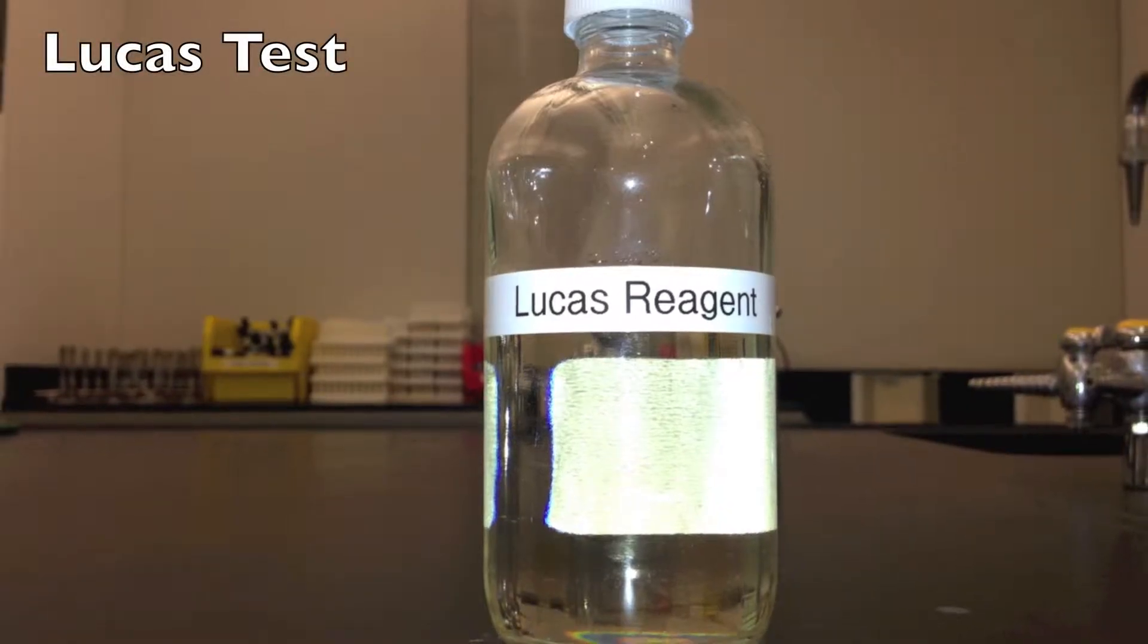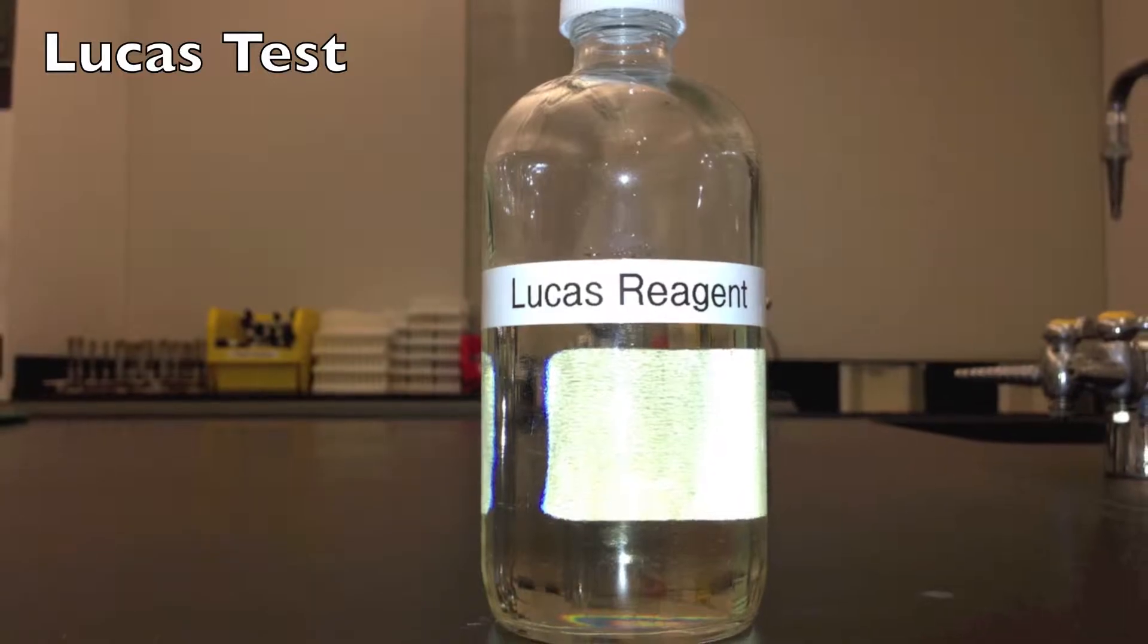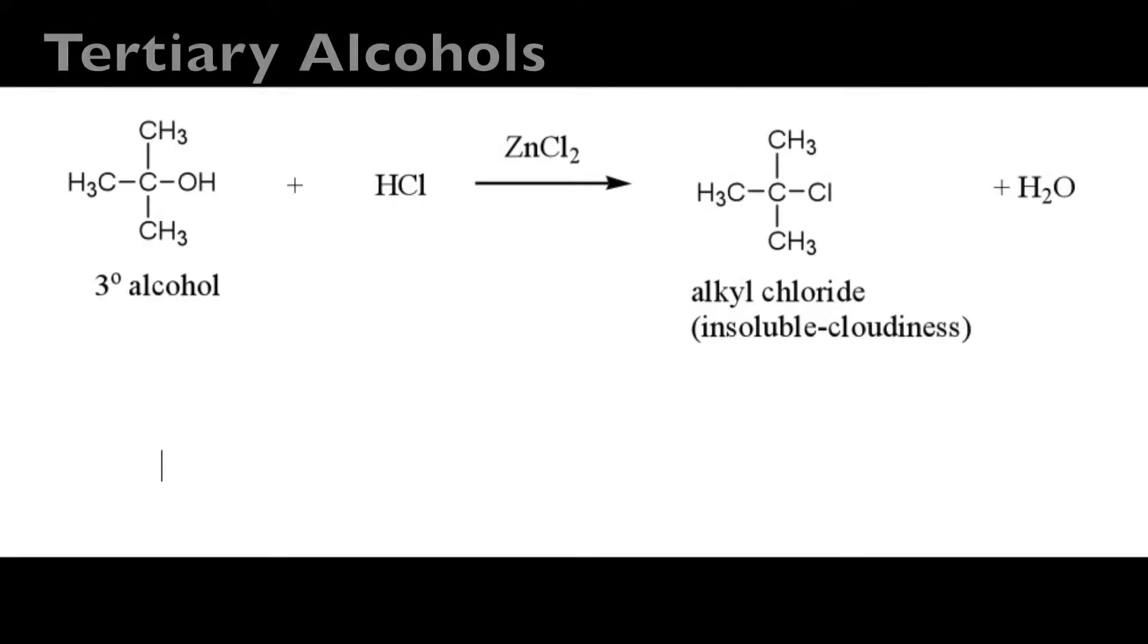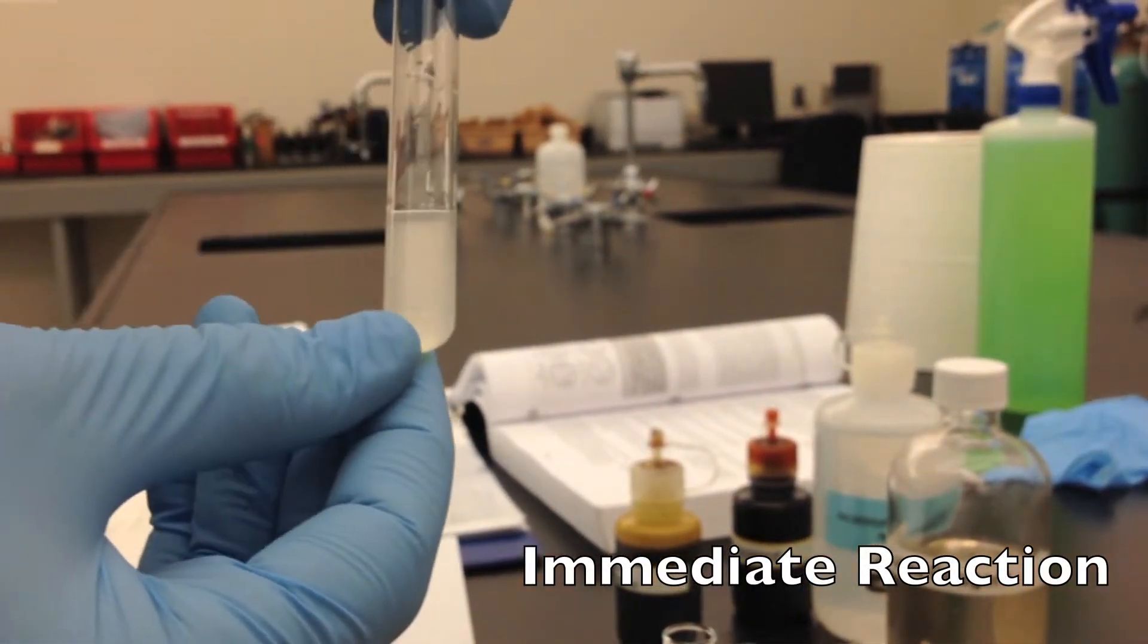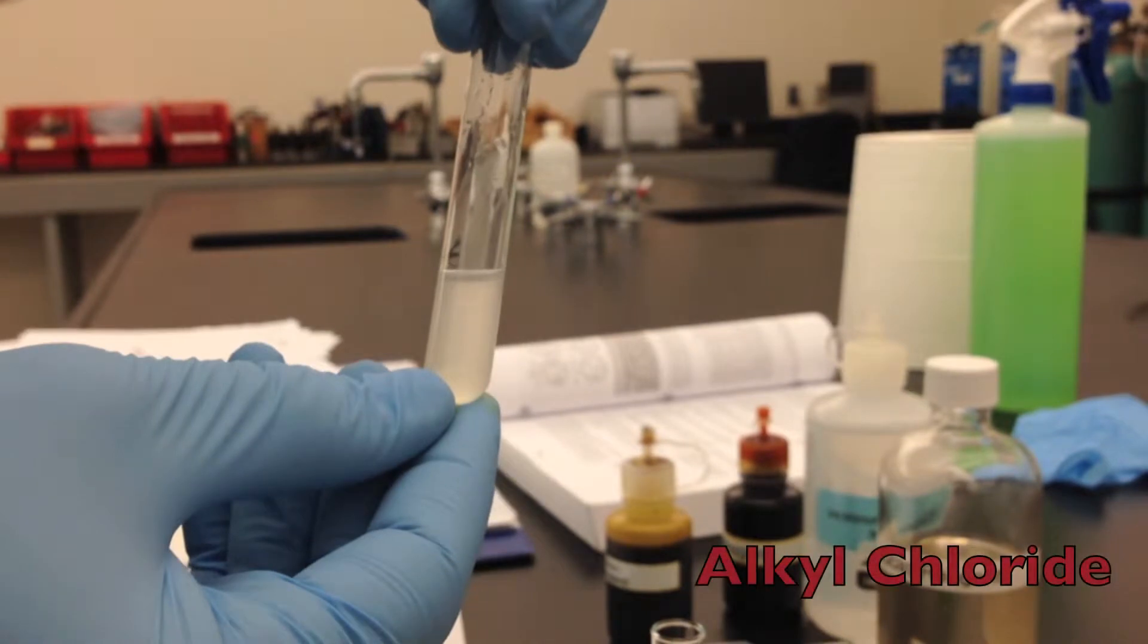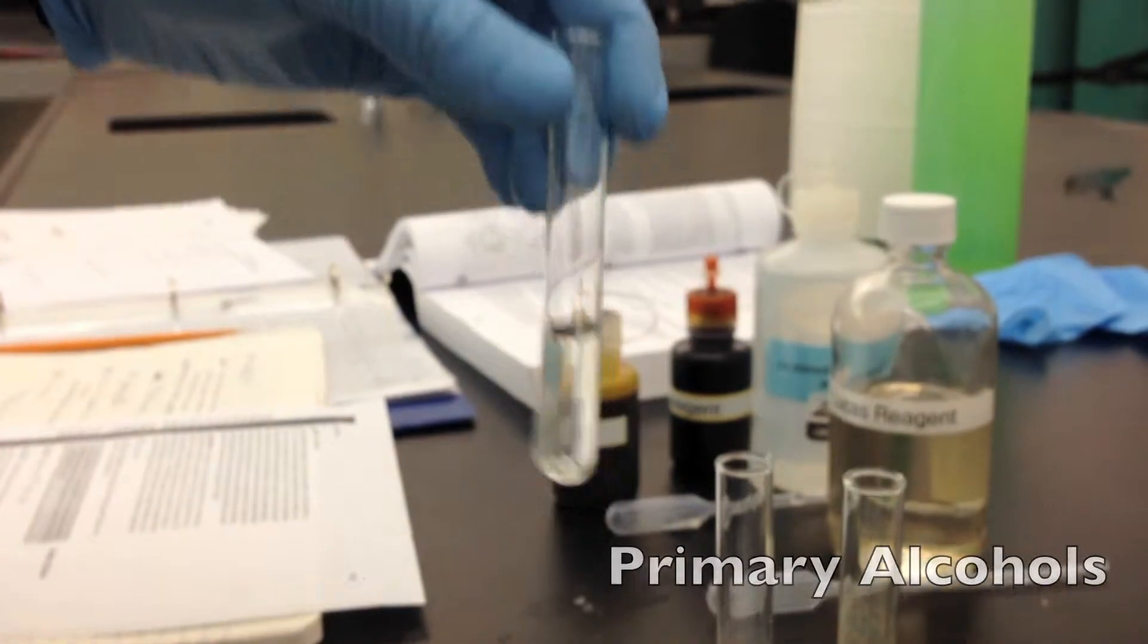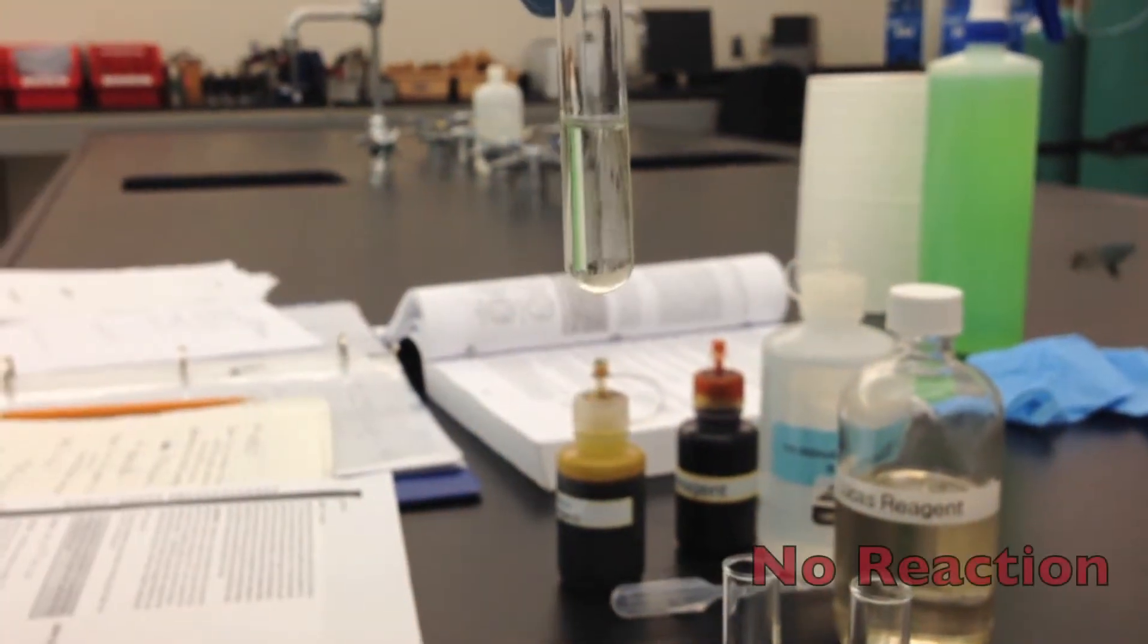Now this is the Lucas test. Tertiary alcohols that are soluble in the Lucas reagent should turn the reagent cloudy almost immediately and soon form a separate layer of alkyl chloride. Secondary alcohols usually turn the clear solution cloudy in three to five minutes and form a distinct layer within 15 minutes. And primary alcohols do not react under these conditions at all.